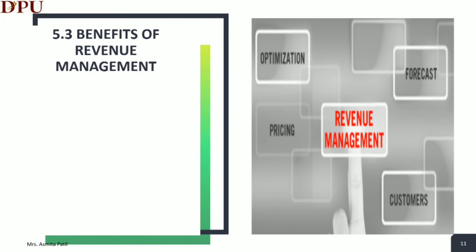Let us see the benefits of revenue management. All hotel companies have a common problem — they have a fixed inventory of perishable products that cannot be stored if unsold by a specific time. The real commodity that hotels sell is time in a given space. If a room goes unsold on a given night, there is no way to recover the revenue lost. To make predictions called FOCAS, managers need information and must understand the property and competitive market, as well as consider future events or variables that might affect business.